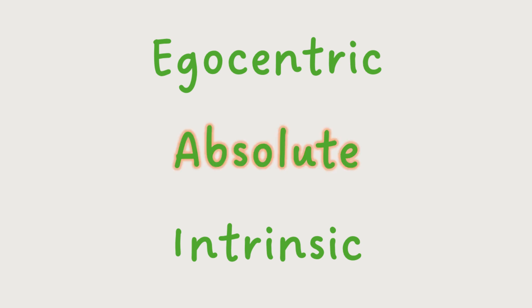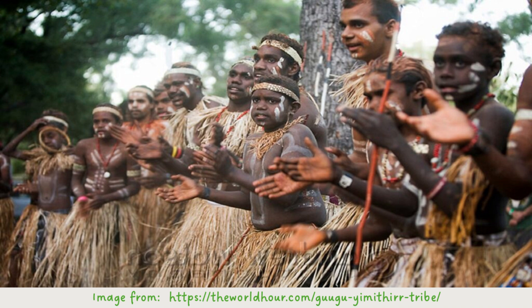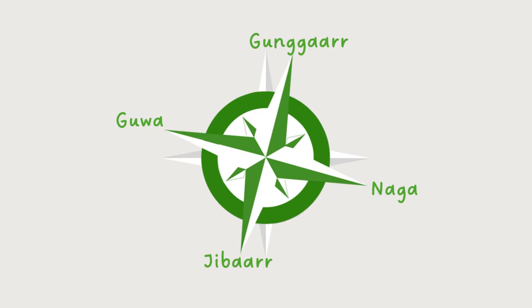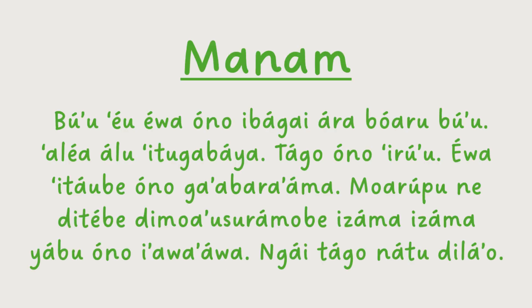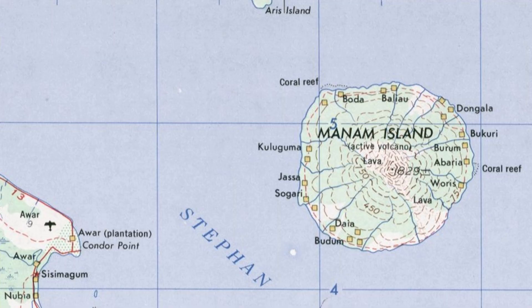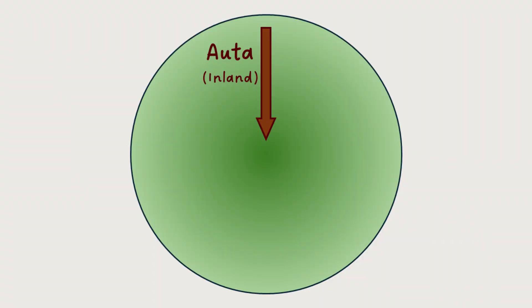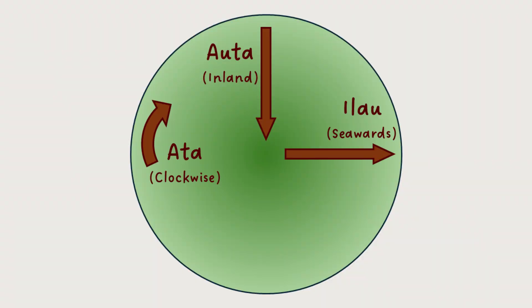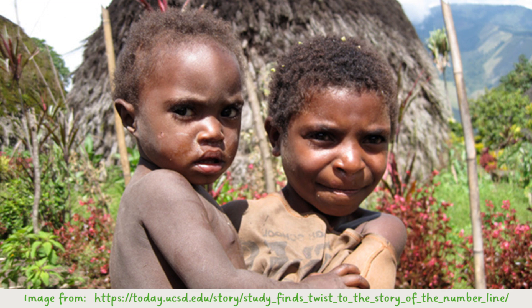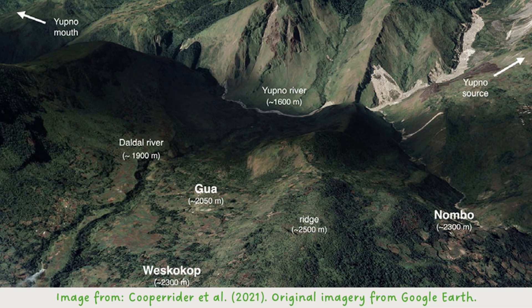Of these three systems, absolute languages have the most different types. We've discussed the Gugu Yimite, who use rough cardinal directions to navigate, but there are far more ways to define your position relative to your environment. For instance, in the Manam language, which is spoken on an almost circular island, the four main words are inland, seawards, and right and left when facing the sea. Another common absolute system is found in the Yupno people, who live in the Yupno Valley in the northeast of Papua New Guinea.